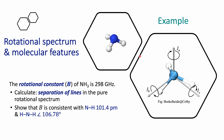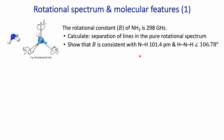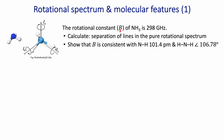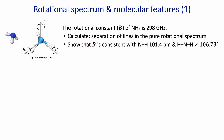Ammonia is a prototypical example for symmetric type rotors. We have a rotational constant for ammonia that is given in units of frequency, gigahertz in this case. Remember that we can also express this rotational constant in terms of wave numbers, and there's an equivalency between the two of them.